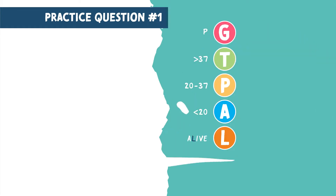So for G, I would write P for pregnant. T, I would write greater than 37. P, 20 to 37. A, less than 20. And for L, I would write ALIVE to remember that this is the number of living children.